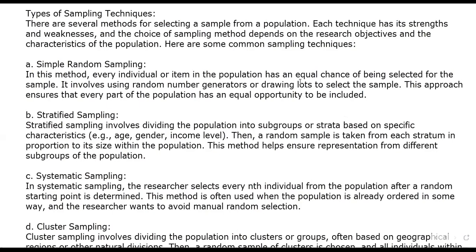Simple random sampling involves using a random number generator, drawing lots, or selecting the sample in a way that ensures every part of the population has an equal opportunity to be selected.